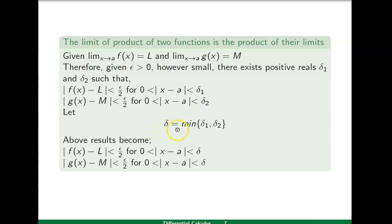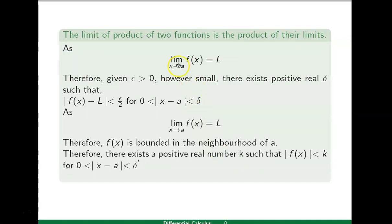We define delta as the minimum of delta-one and delta-two, which serves the purpose for both conditions simultaneously. So these two inequalities are both satisfied for the common value delta: |f(x)−l| less than epsilon/2 and |g(x)−m| less than epsilon/2, for zero less than |x−a| less than delta. Also, since the limit of f(x) exists, f(x) is bounded.